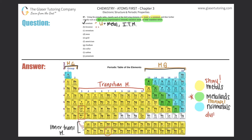Element b: Bromine. Bromine's symbol is Br, and it's in the blue category on the periodic table. Since it's to the right of the staircase, it's a non-metal. And since it's in one of the two tall skyscraper groups, it's a main group element.